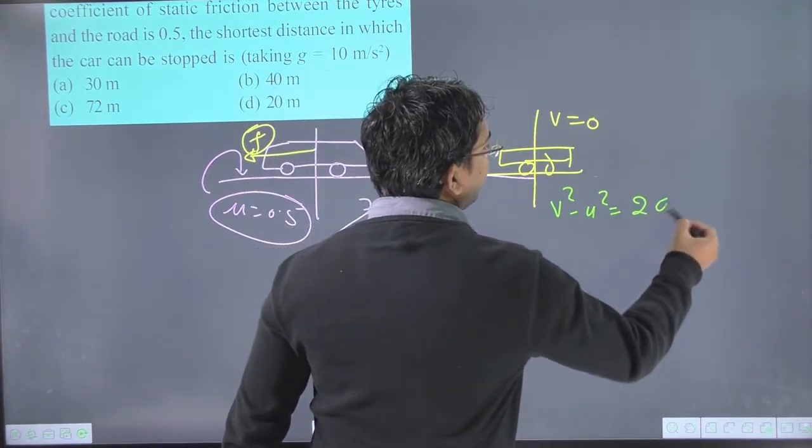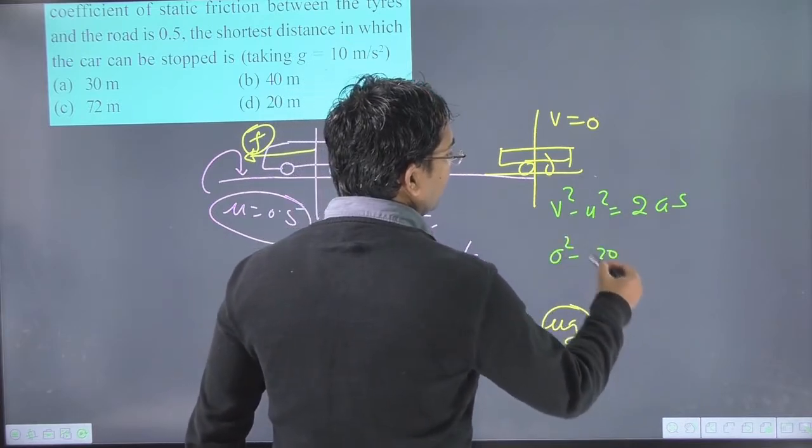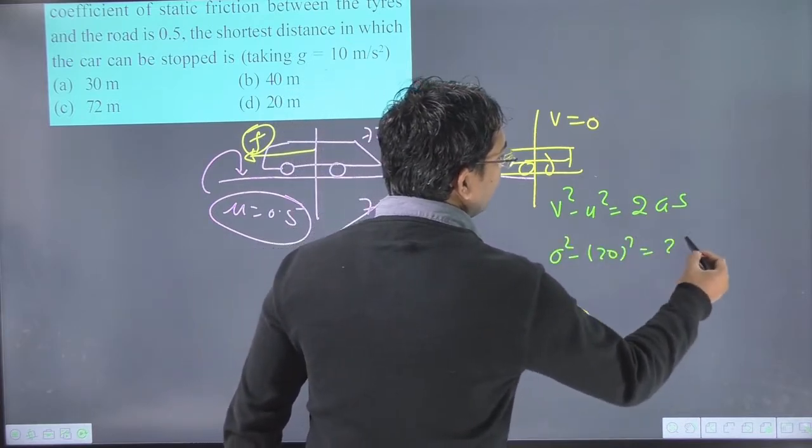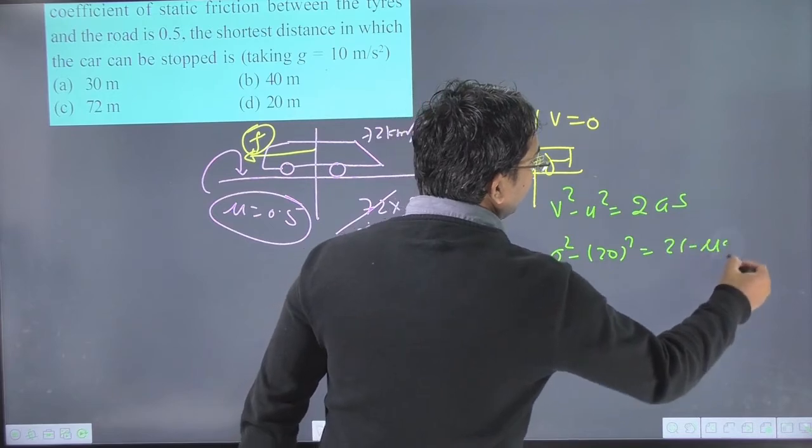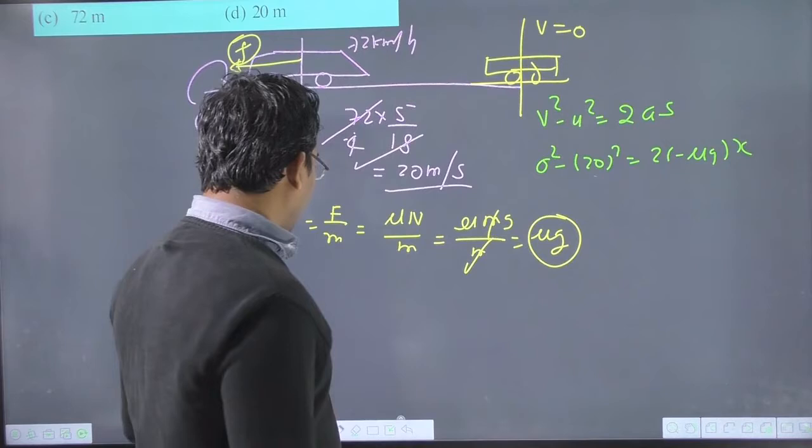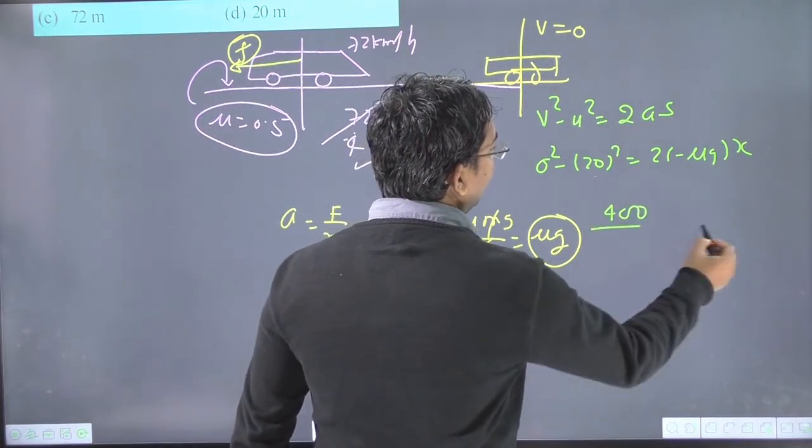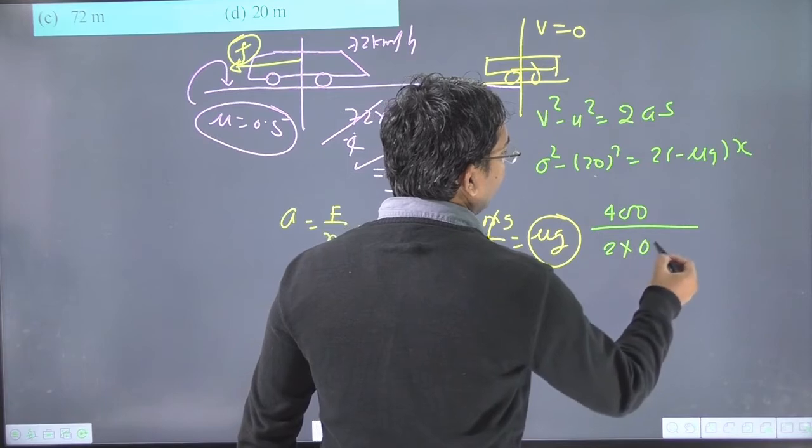Using v² = u² + 2as, the final velocity is 0, initial velocity is 20 meters per second, with retardation μg, and displacement x. So 0 = 400 minus 2 times μg times x. With μ = 0.5 and g = 10...